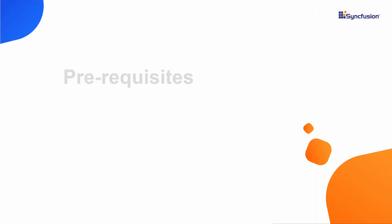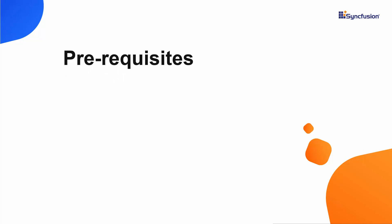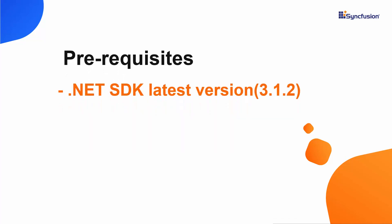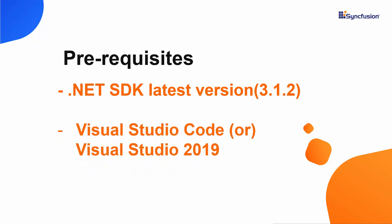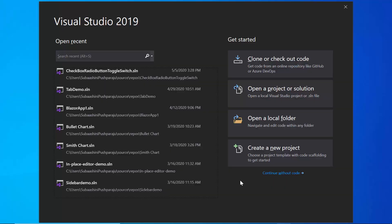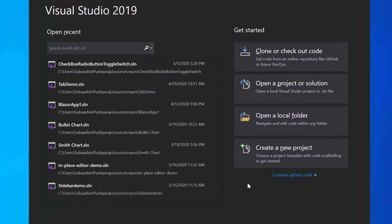Before I start to create a Blazor application, I need to make sure whether the .NET Core SDK latest version is installed on my machine and I should have Visual Studio Code or Visual Studio 2019. I'm going to create a new server-side Blazor app, so let me open Visual Studio 2019 first and create a new project from the dashboard.